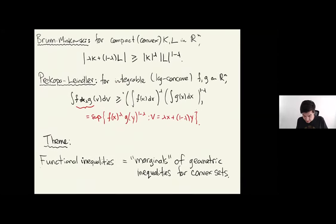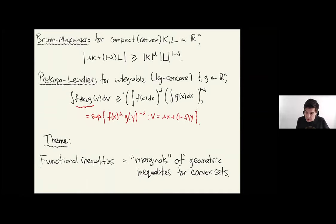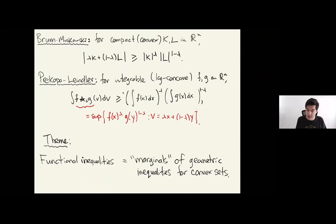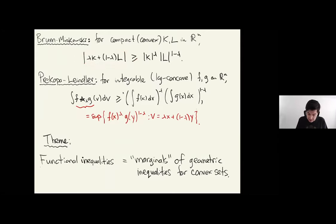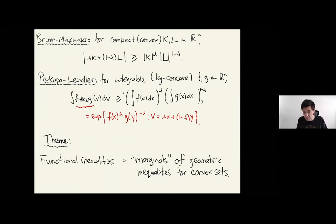I'll start by recalling the Brunn-Minkowski inequality. It says that for compact convex sets K and L in R^n, the volume of the Minkowski sum of K plus L with such coefficients is at least as large as this geometric mean in terms of lambda. Convexity here is not important — it's parenthetical — but it will play a role later. It says that volume as a functional with respect to Minkowski addition is logarithmically concave.